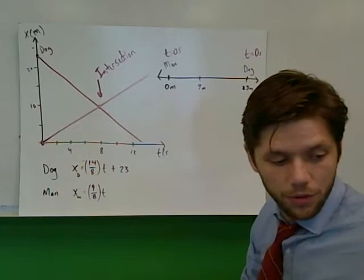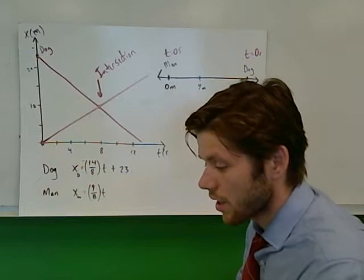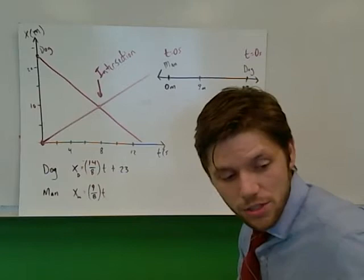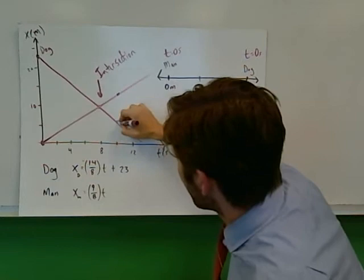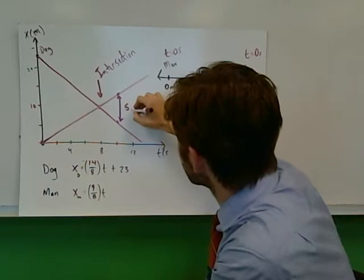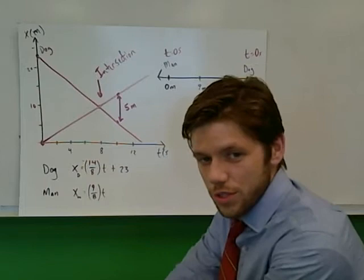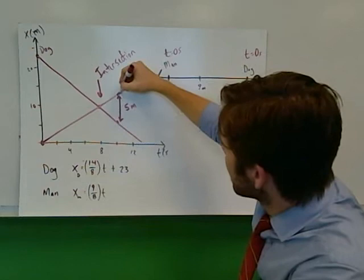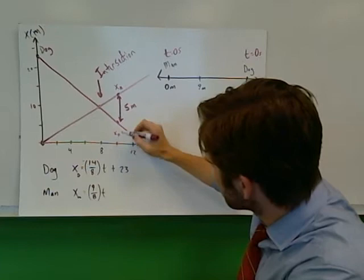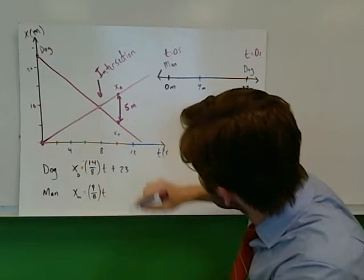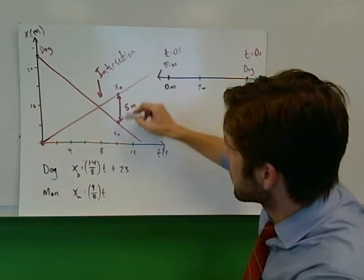The position of the man will be 9 over 8 times t. Those are our two equations. We can figure out a couple things. We already know when they intersect, so that's not really of interest. But the question asks: if they continue past one another, how long would it take them to be separated by 5 meters? So when does that distance between them equal 5 meters?